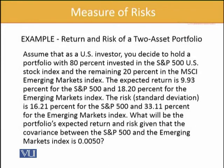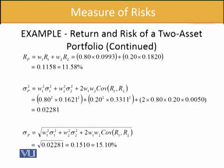Now we'll move to the solution. For the expected portfolio return: 0.8 refers to 80% invested in S&P 500 with a return of 0.0993, and 0.2 multiplied by 0.182 for the 20% in emerging markets. This gives us a portfolio return of 11.58%. It is simply a weighted average — 80% of what S&P returned plus 20% of what emerging markets returned, summed together.